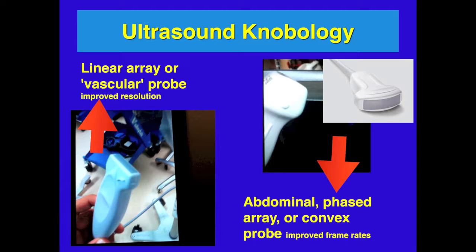The other probes are abdominal and phased array or convex probes. These probes can differ in the size of their footprint and the angle they make. The abdominal probe is used for structures in the abdomen such as kidneys and aortas. The phased array or cardiac probe can be used to get into tighter spaces between ribs and to look at the heart. Compared to the linear array, abdominal and phased array probes have improved frame rates, which improves motion visualization of structures such as the mitral valve or Doppler flow.